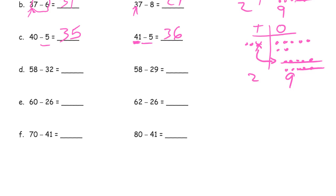Now we're back to where the minuends are the same but our subtrahends are different. Let's figure out the first one — 58 minus 32. We're looking at 8 minus 2 for the ones, so there'll be 6 ones left. And then 2 tens left, because it's 5 tens minus 3 tens — that's 26. Now if we're taking away less, we should have more. The difference between 29 and 32 is 3, so we should have 3 more: taking away 3 less means 3 more left — 29.